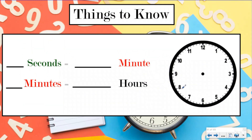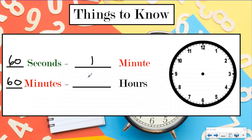Things you need to know today — and you might already know some of these — but we're going to prove them with our clock over here. 60 seconds equal one minute. Our clock face for minutes and seconds is all based on 60. There are 60 tick marks, and if you look at an analog clock, you'll see a second hand that's typically red going around. When it passes 60 seconds, the minute hand moves. Once the minute hand goes around for 60 minutes, the hour hand will move. So 60 minutes equals one hour. Everything we're doing today is based on 60.